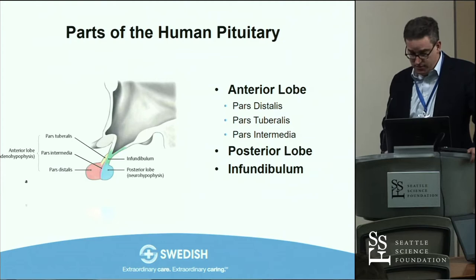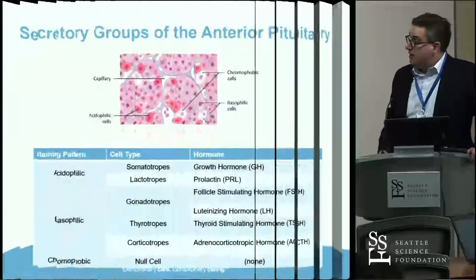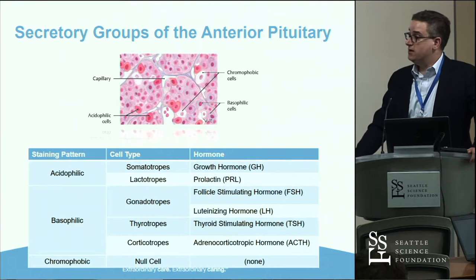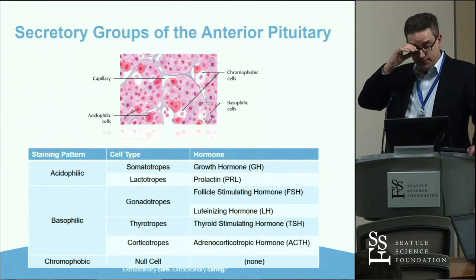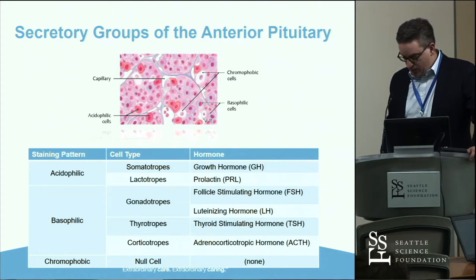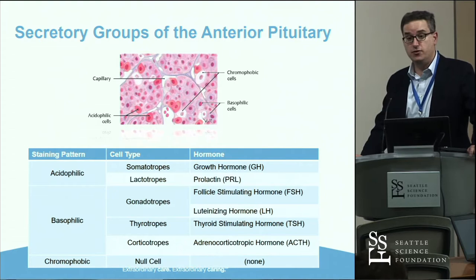We have six anterior and two posterior sets of hormones, and the historic H&E classification for the different cell types still appears on both written and oral boards. The acidophils are your mammosomatotrophs secreting growth hormone and prolactin. The basophils are your gonadotropes, thyrotropes, and corticotropes, and then the chromophobes are the so-called null cells. Interestingly, the histopathology of quote-unquote null cell or non-functioning pituitary adenomas shows that most are actually silent gonadotrope adenomas — not true null cell tumors.